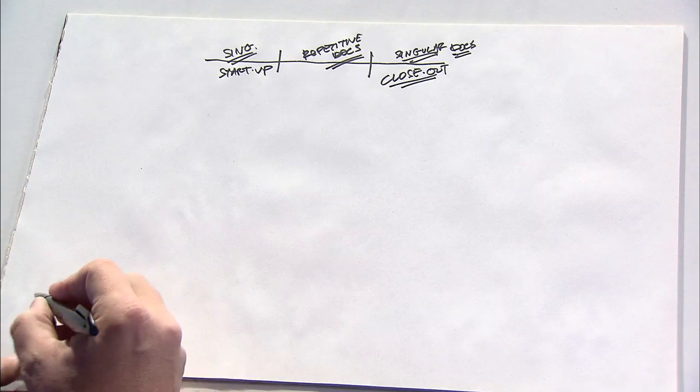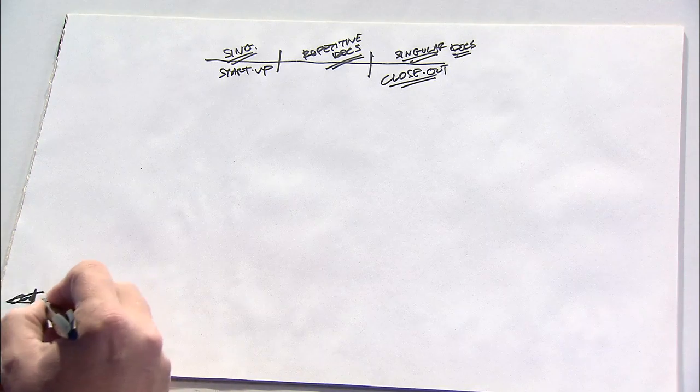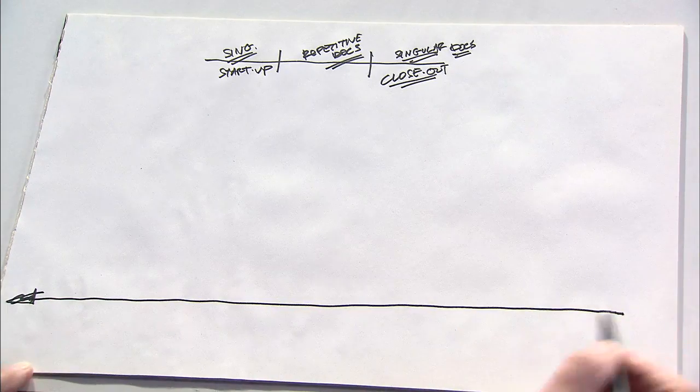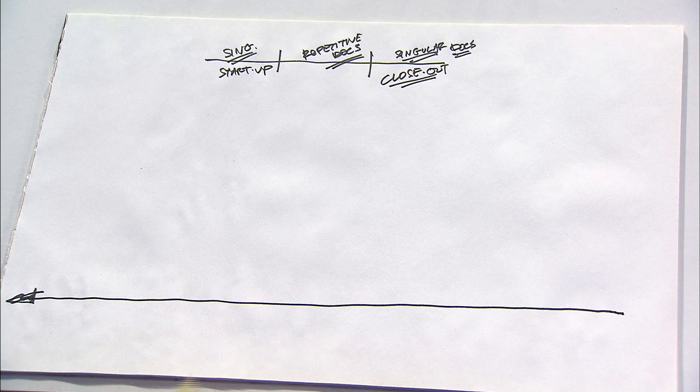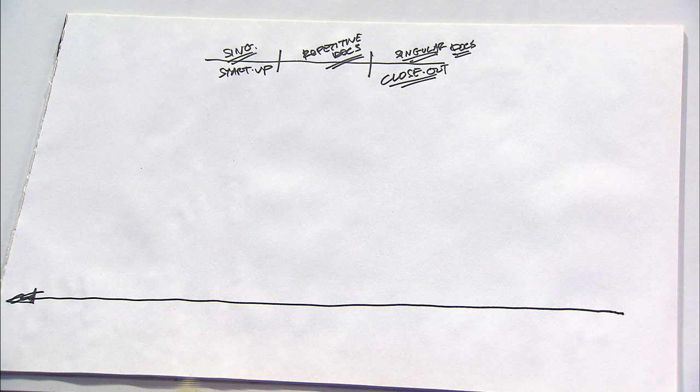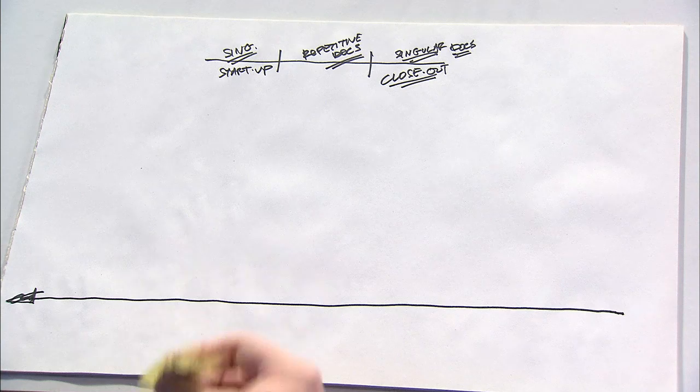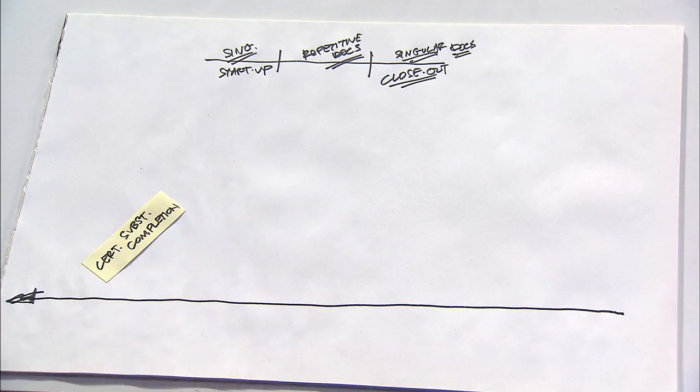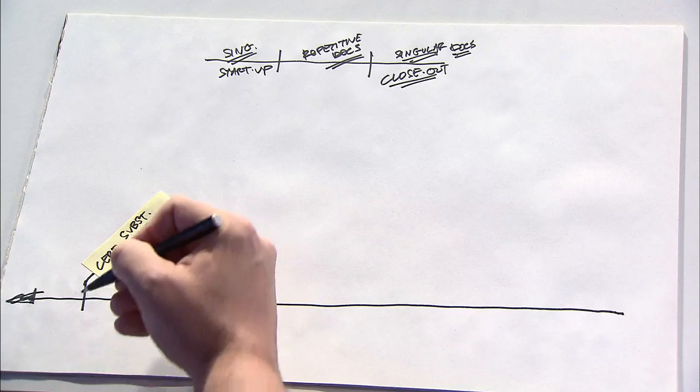So let's recreate our timeline at a larger scale, this arrow representing that this is the back end of the job. And in the closeout phase, the document and event that occurs around which most of the other things revolve is the issuance of a Certificate of Substantial Completion.